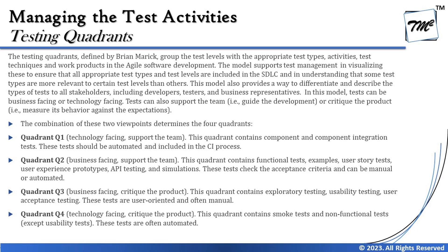The model also provides a way to differentiate and describe types of tests to all stakeholders — including developers, testers, and business representatives. Tests can be business-facing or technology-facing, and tests can support the team by guiding development or critiquing the product. Technology-facing means meeting standard technical aspects, while business-facing means fulfilling and validating requirements against customer expectations.